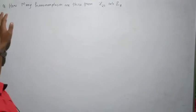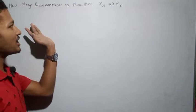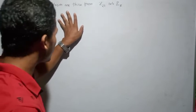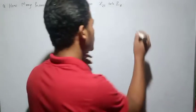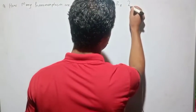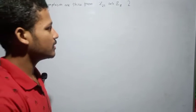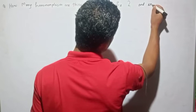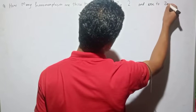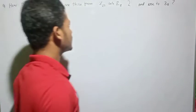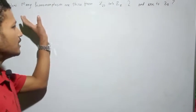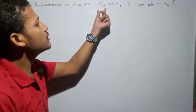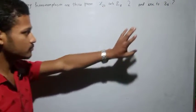My mathematician brother, there is a problem on the screen, and this problem is: How many homomorphisms are there from Z20 onto Z8? The first problem is Z20 onto Z8, the second problem is Z20 onto Z8 — they are different.